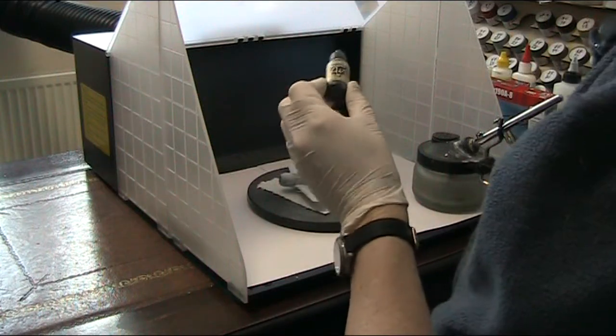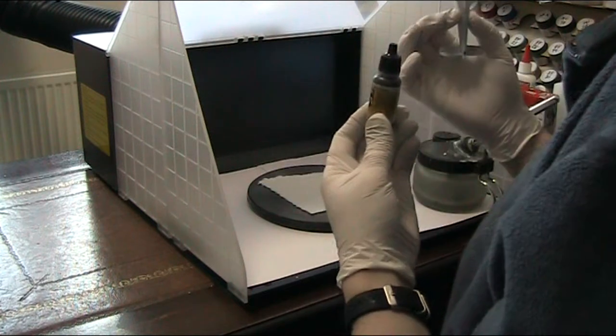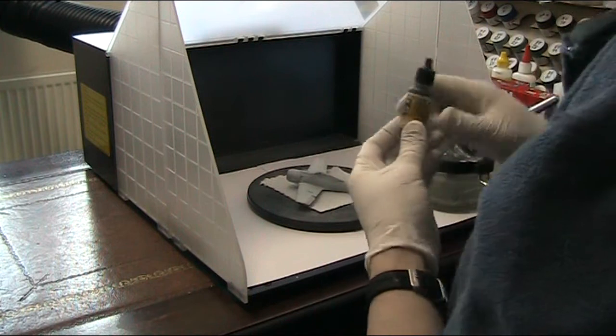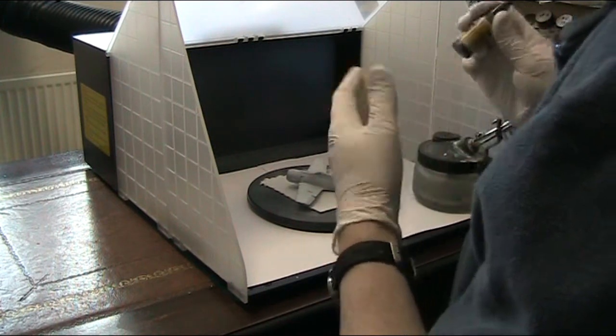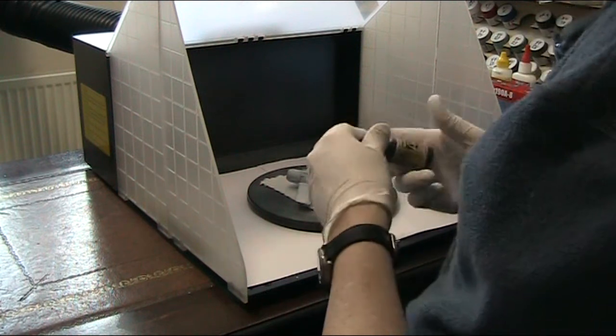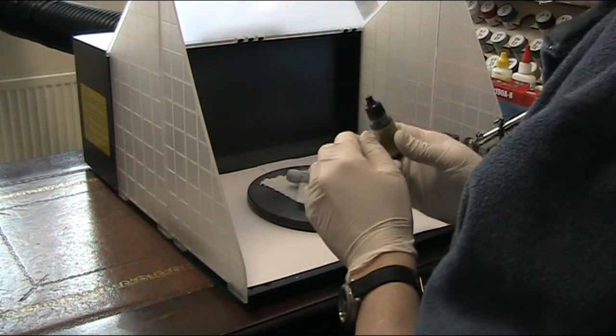I've got my bottle of Vallejo Model Air and my FW 190. I'm going to get a bit of this paint in the airbrush, only a little bit, just go over those panel lines and hopefully that'll give a bit of a pre-shading effect once it goes down. Let's crack on and get this pre-shaded.